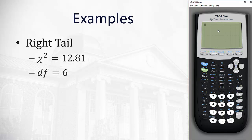We can find this on the TI-84 Plus by hitting Second, the Vars key (which gives us Distribution), and scrolling down to select Chi-squared CDF.